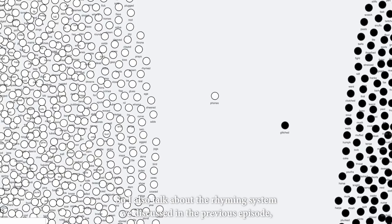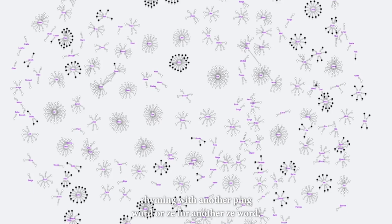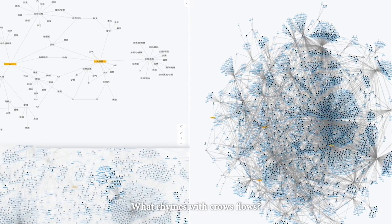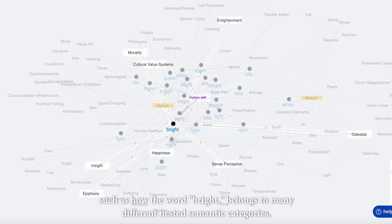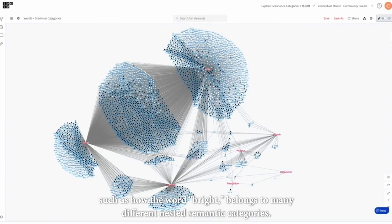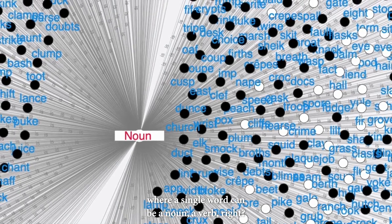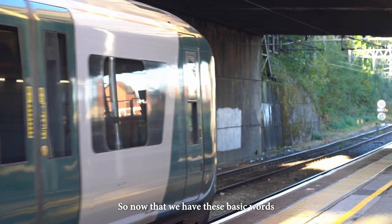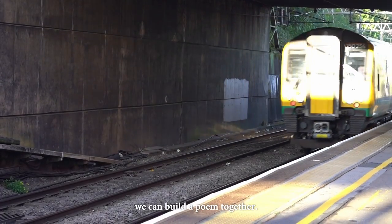I also talk about the rhyming system discussed in the previous episode — the ping and ze system of the rhyme tables — and how a word must be ping in order to rhyme with another ping word, or ze for another ze word. We build an end rhyme system: what rhymes with crows, flows, sows? Then there's semantic rhymes — those tong lei, those categories of meaning resonance such as 'bright' belonging to many different nested categories. And there's grammatical resonance where a single word can be a noun, a verb, or even an adjective, like the word 'spring' discussed in the previous episode. Now that we have these basic words and the different layers of rhyming, we can build a poem together.